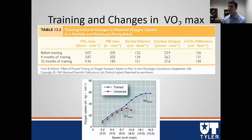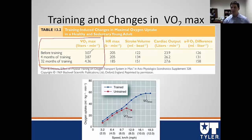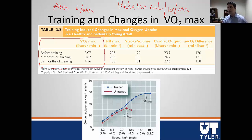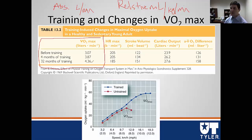Looking at this figure, before training the average VO2 max is about 3 liters per minute in absolute terms. VO2 max can be expressed in absolute terms — liters per minute — or in relative terms — milliliters per kilogram per minute — which accounts for body weight. Relative is most commonly used. Four months after training with progressive overload, VO2 max can improve from 3.07 to around 4.36 liters per minute.